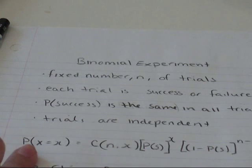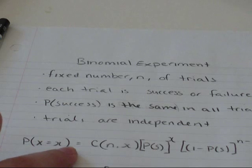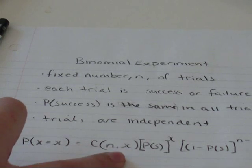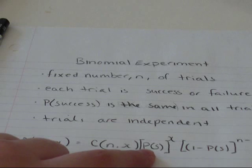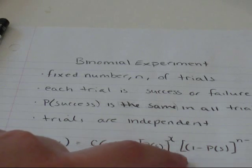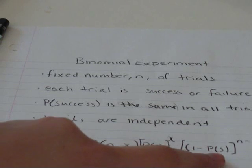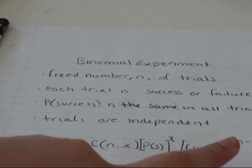the probability of having X number of successes is going to equal the product of the number of trials, choose however many you want to be successful, the probability of success to the power of however many successes you want, and the probability of failure or one minus the probability of success to the power of however many trials you want to fail.